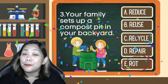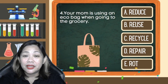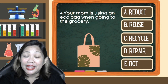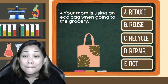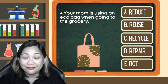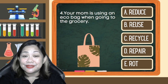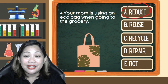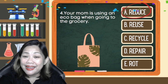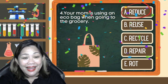Number 4: Your mom is using an eco bag when going to the grocery. Is it A. Reduce, B. Reuse, C. Recycle, D. Repair, or E. Rot? The correct answer is A. Reduce. Wow, you got it right!